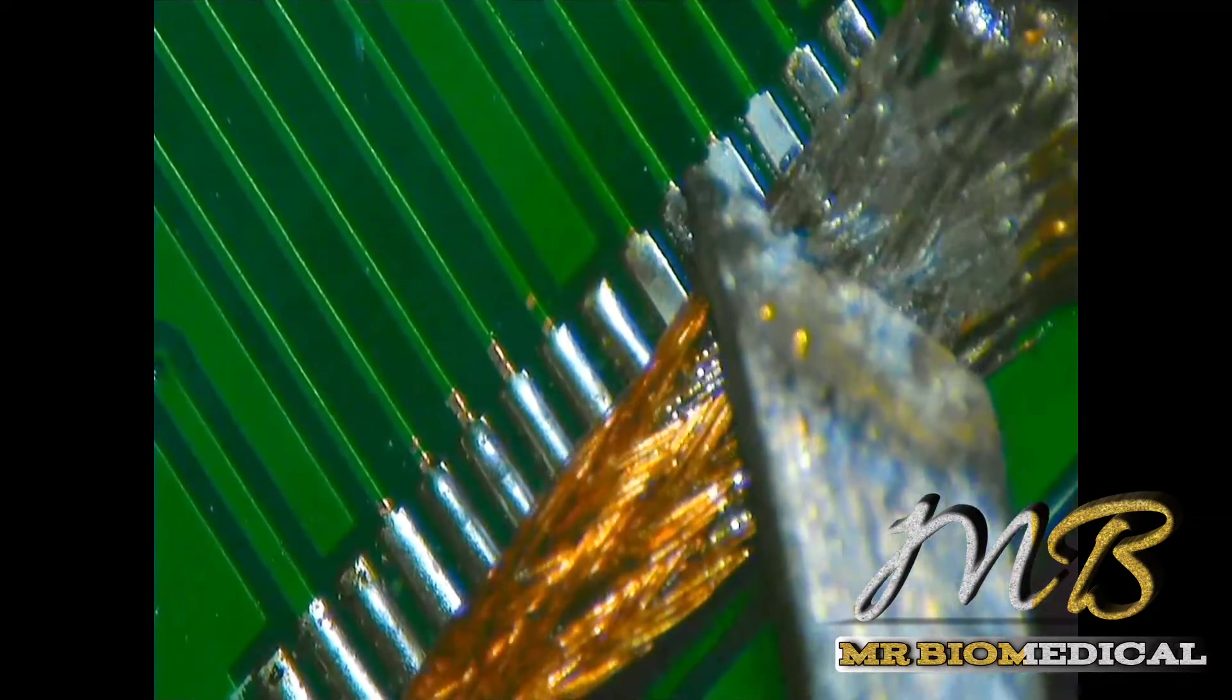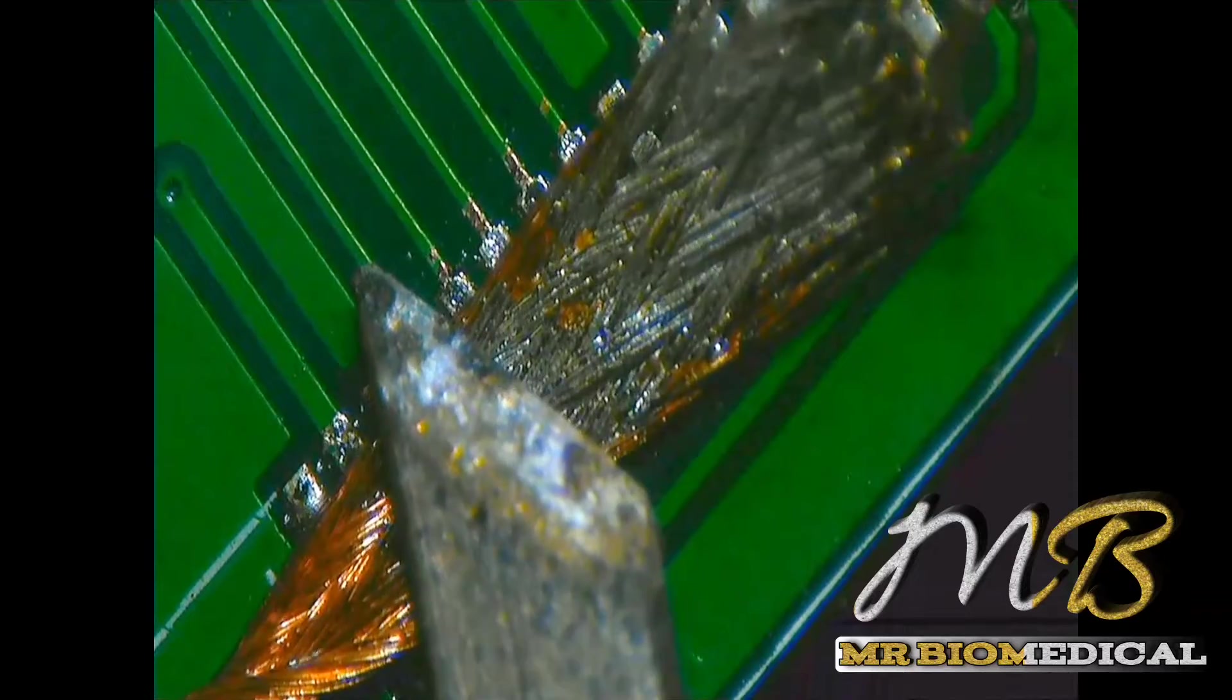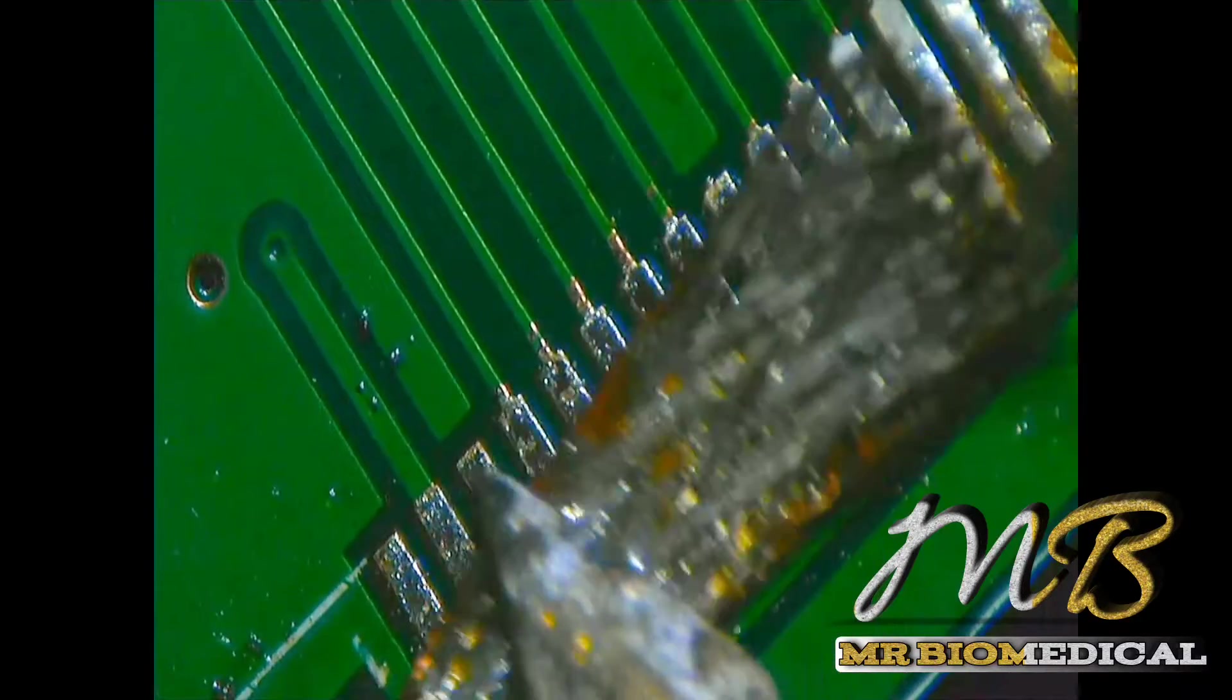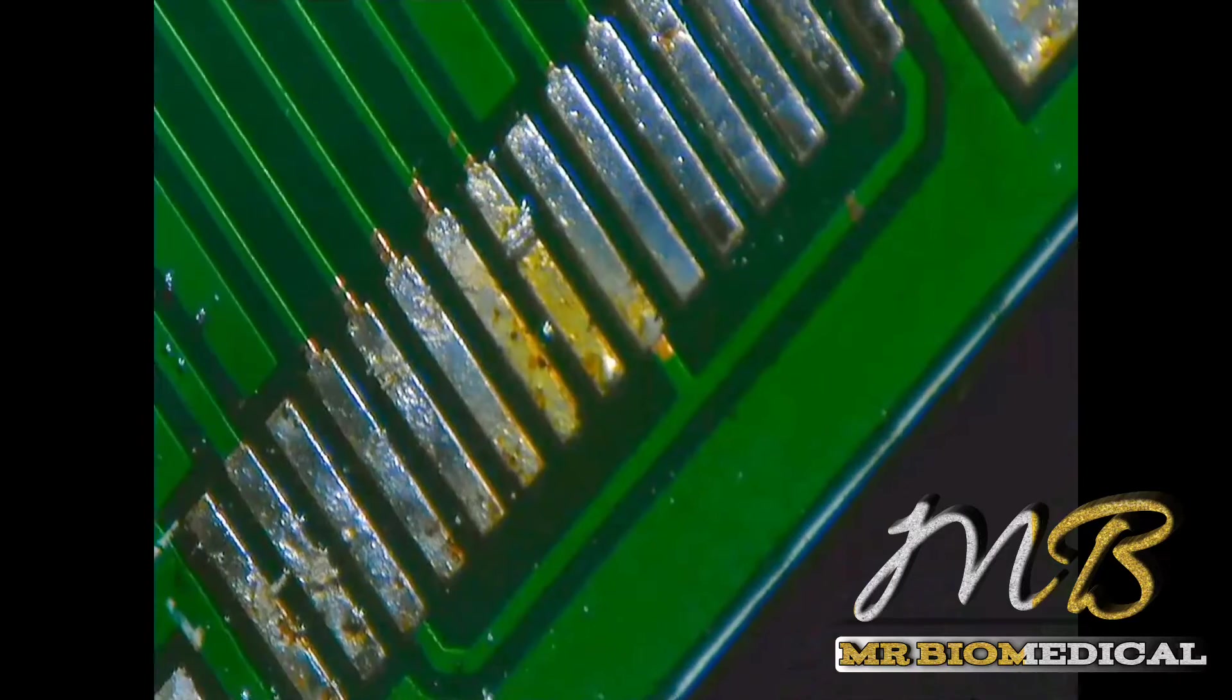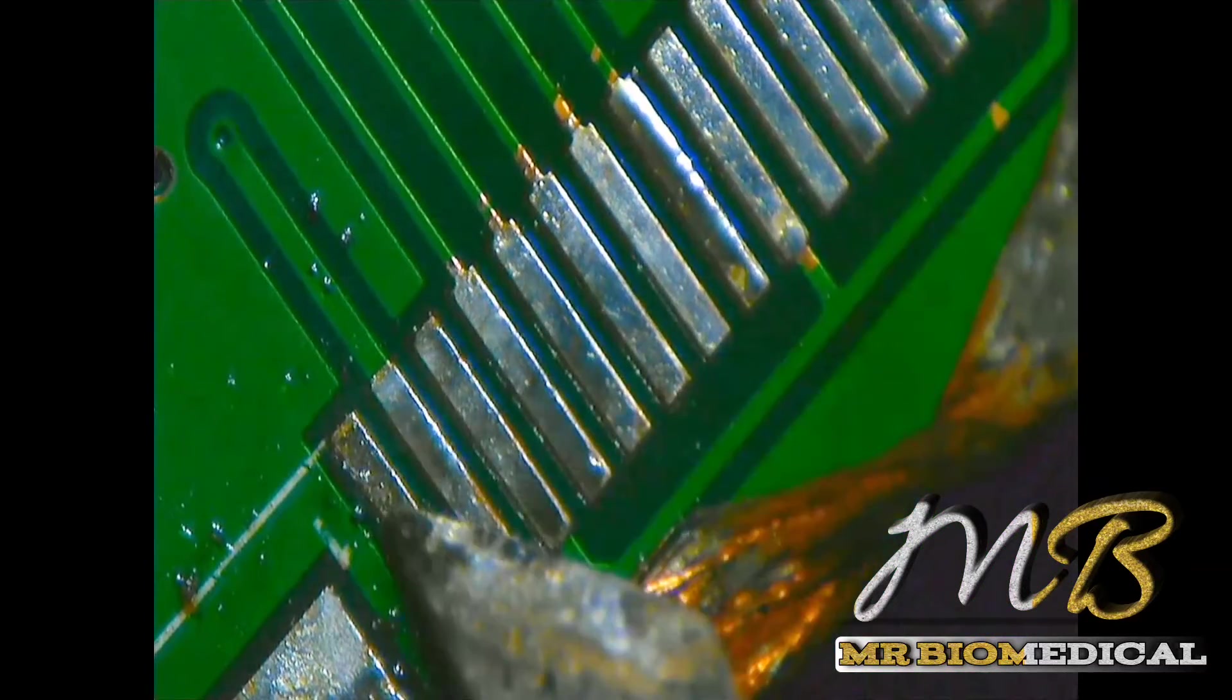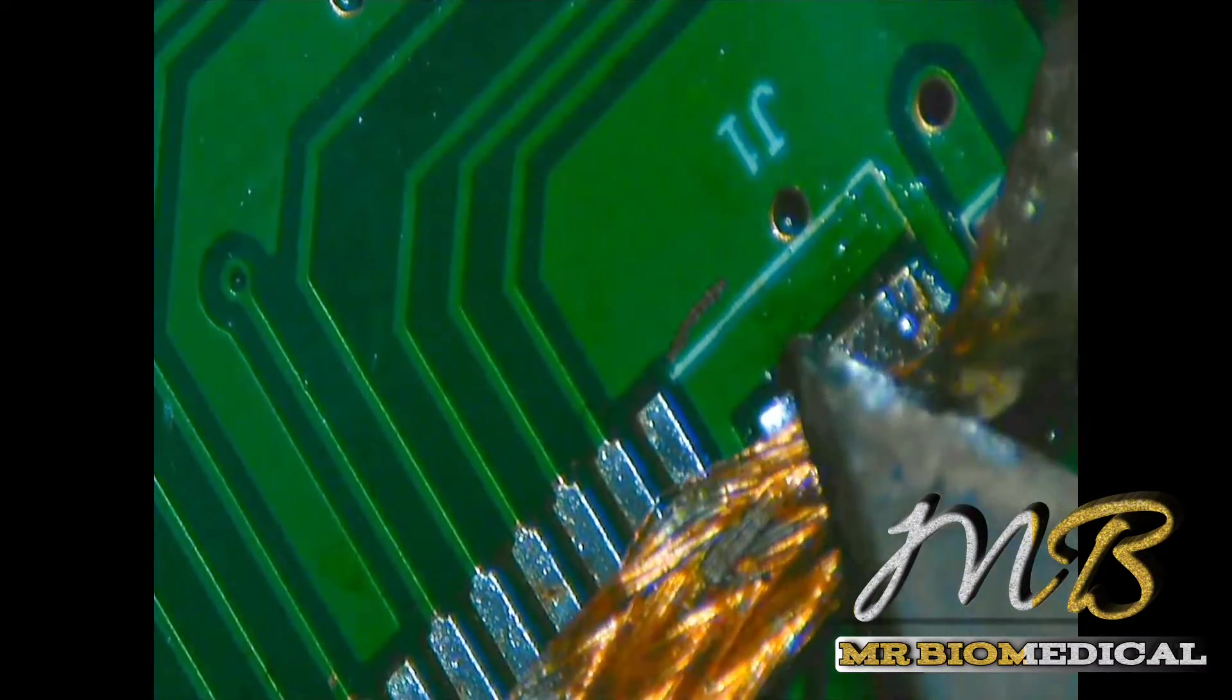Don't forget to use the quality one because if you are using quality flux and quality wick it will be much smoother for you. Be careful on it. Now our job is done as you can see. The whole flow is coming very smoothly, and yes, now we can connect the FPC connector back. It's good.